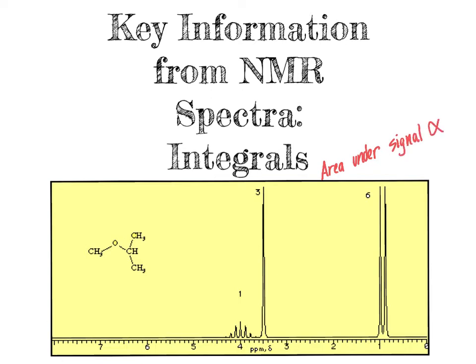The area under a signal is proportional — using the alpha symbol to indicate proportionality — to the number of protons comprising that particular signal. So if you are looking at the signal for a methyl group, that will integrate to a larger value than the signal for a CH2 group. The specific values or ratios of those integrals will indicate to us how many protons are comprised in each signal.